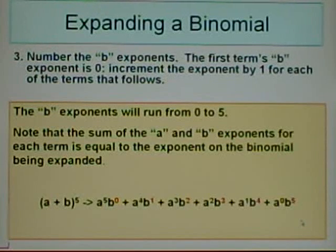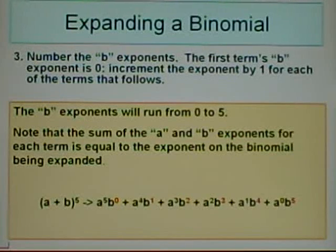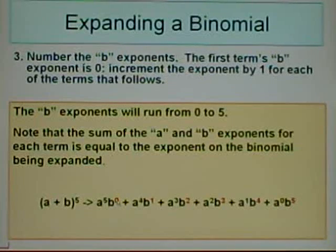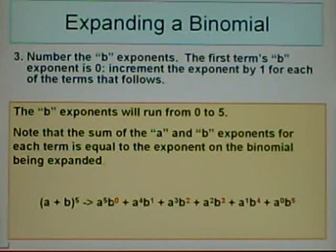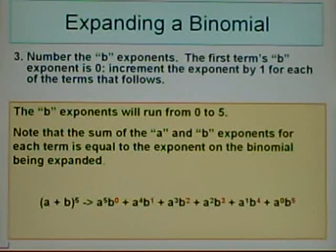Step 3: Number the B exponents. The first term's B exponent is 0. Increment the exponent by one for each of the terms that follows. The B exponents will run from 0 to 5. Note that the sum of the A and B exponents for each term is equal to the exponent on the binomial being expanded. So we have B raised to the 0, B raised to the 1st, 2nd, 3rd, 4th, and finally B raised to the 5th. Notice that 5 plus 0 equals 5, 4 plus 1 equals 5, 3 plus 2 equals 5, 2 plus 3 equals 5 — all equal the exponent on the binomial.